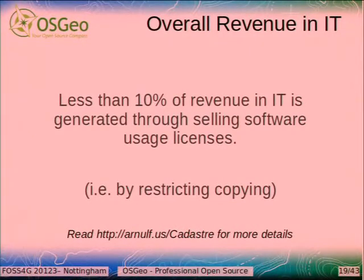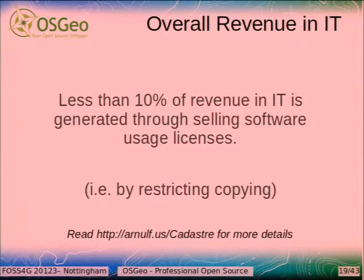Let's lean back. Why is there so much fuss about license selling? Less than 10% of revenue in IT is generated through selling software usage licenses. So why do we think open source makes everything so much cheaper if it's just 10%? In Asia it's even only 2% because a DVD without the text costs just $2 at the street corner. All the rest — here in our area — is support, maintenance, service level agreements, training, consulting, and implementation.